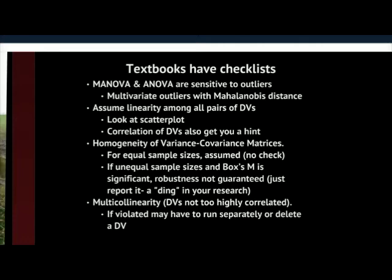Mahalanobis distance works with continuous variables when you have two, three, or four. You can look at those together with Mahalanobis distance and find out if you have outliers, particularly if you have three or more. Some people will go ahead and do Mahalanobis distance with two DVs, but that's a little less necessary, partly because of the next point which is about linearity.